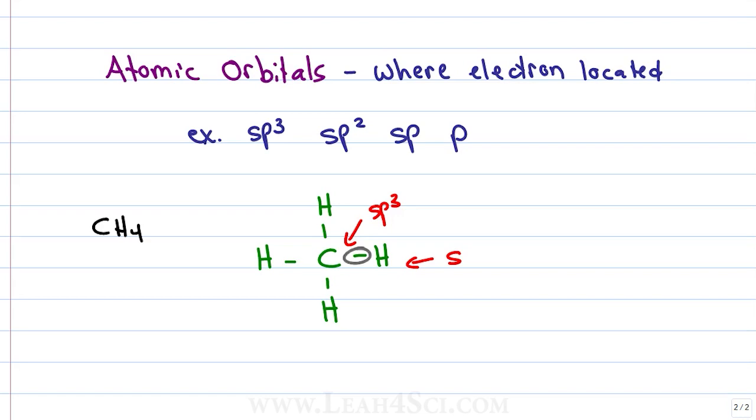The bond between carbon and hydrogen is an overlap between the sp3 hybrid orbital of carbon and the s orbital of hydrogen.